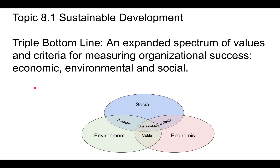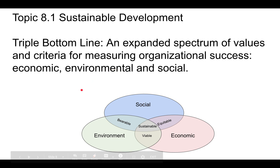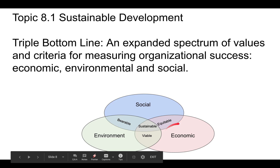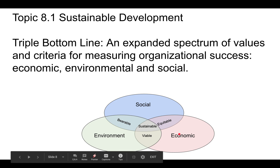Triple bottom line is an expanded spectrum of values and criteria for measuring organizational success in economic, environmental, and social terms. As we are sustainably developing, we want to make sure we can grow the economy — that's very important. We want to bring people out of poverty, we want people to have economic success, and we want them to essentially be able to support themselves.